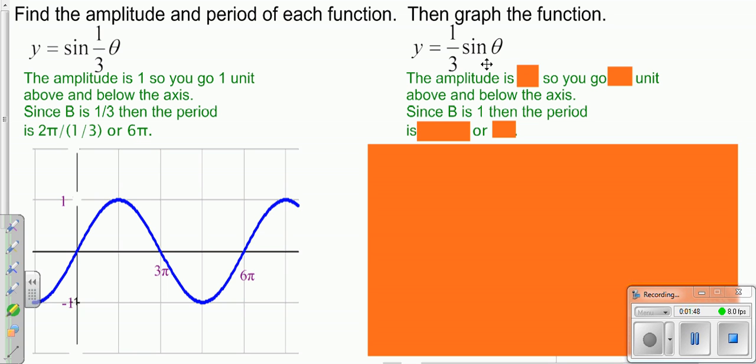So looking over here at this one, remember the number in front tells you your amplitude. If it was a negative, it'd flip your graph upside down, but amplitude would still be positive. So in this case, we're going 1/3 up and down. The number in front of your variable of your angle is 1, so your period's not being changed, so it's still 2π.